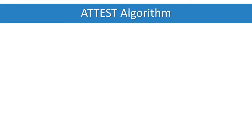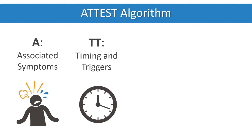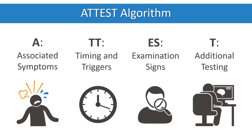The ATTEST algorithm — A for associated symptoms, TT for timing and triggers, ES for examination signs, and T for additional testing — has a strong evidence base in the literature and allows for a more accurate diagnosis.